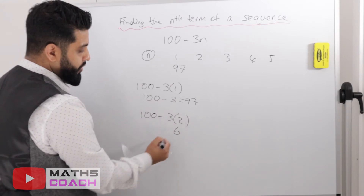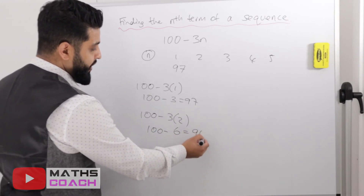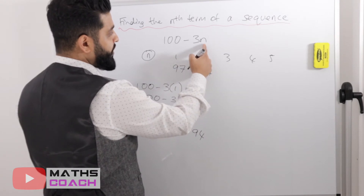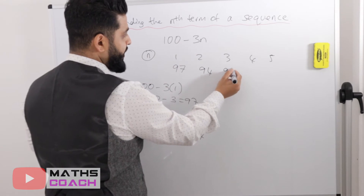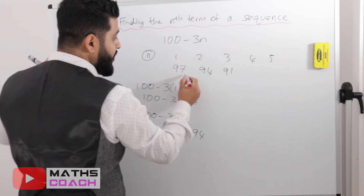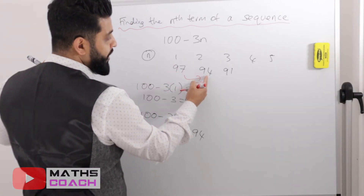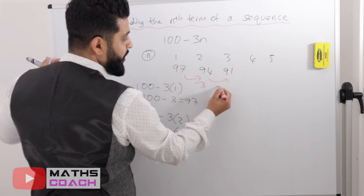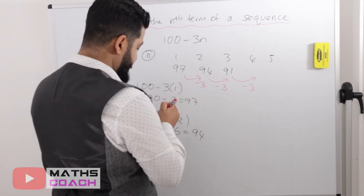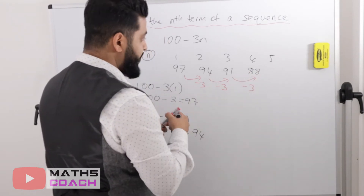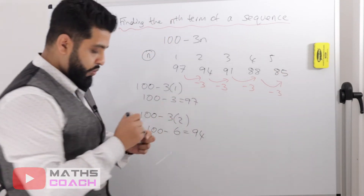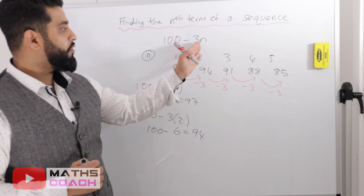For n equals 3: 3 times 3 is 9, 100 take away 9 is 91. You'll notice a pattern — going from 97 to 94 we subtract 3, and from 94 to 91 we subtract 3. So the next term is 91 take away 3, which is 88, and then 88 take away 3 gives us 85. We generated part of the sequence by substitution and the rest by spotting the pattern.